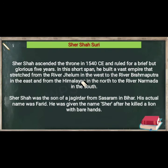Sher Shah Suri ascended the throne in 1540 CE and ruled for a brief but glorious five years. In his short span, he built a vast empire that stretched from the river Jhelum in the west to the river Brahmaputra in the east, and from the Himalayas in the north to the river Narmada in the south. Sher Shah Suri was the son of Hasan Khan from Sasaram in Bihar. His actual name was Fareed, and he was given the name Sher after he killed a lion with his bare hands.